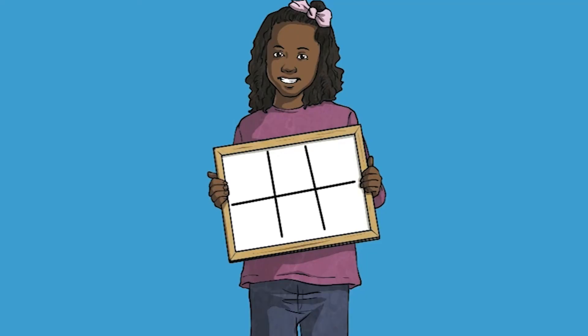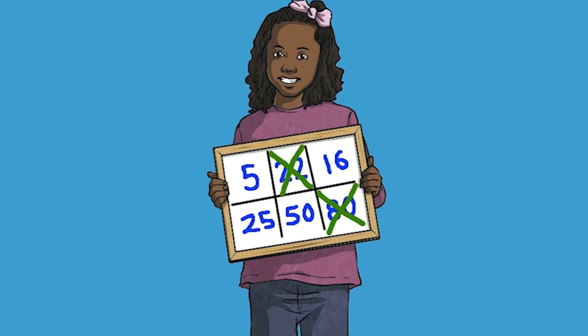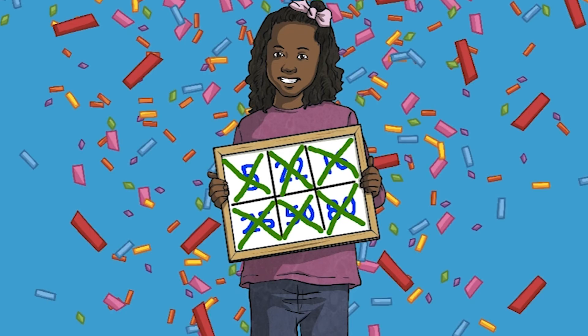Children write some multiples of 2, 5, or 10 on a whiteboard. The adult calls out a multiplication or division fact, and the first to cross off all their answers wins the game. The same game could be repeated with word problems as clues.